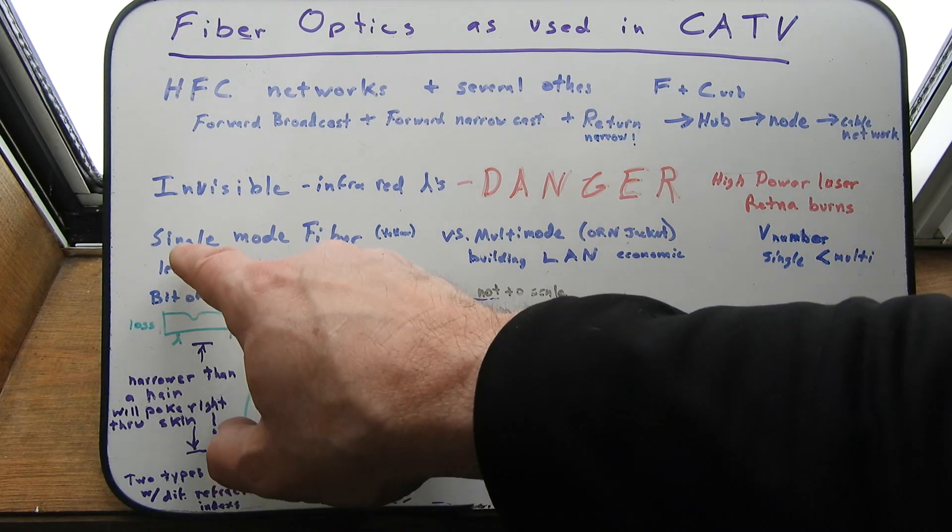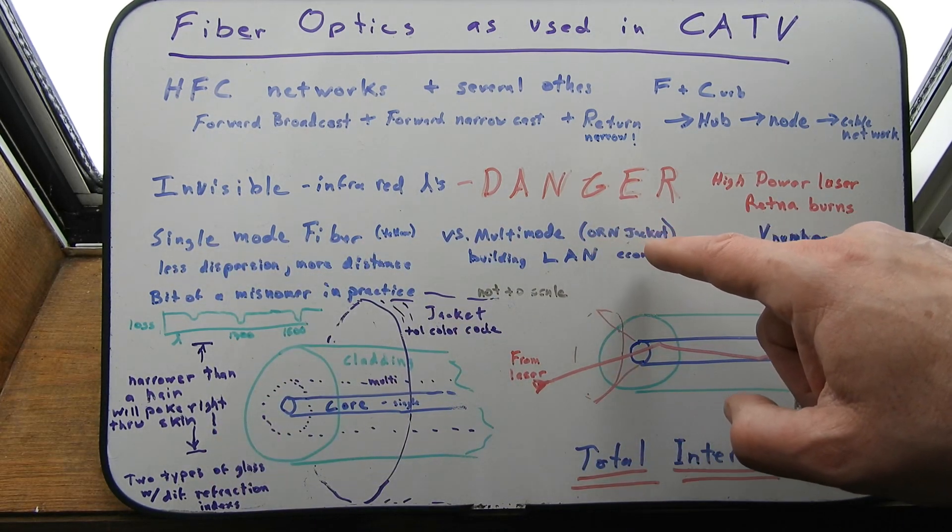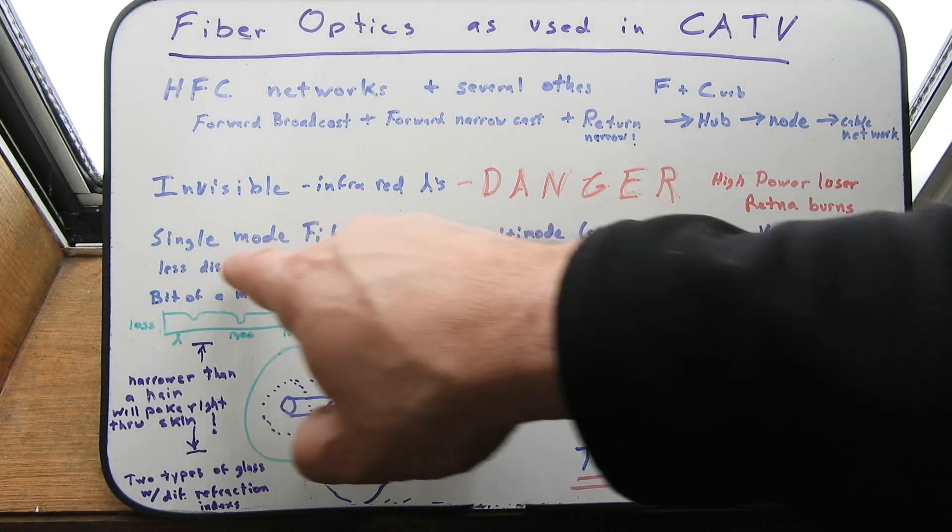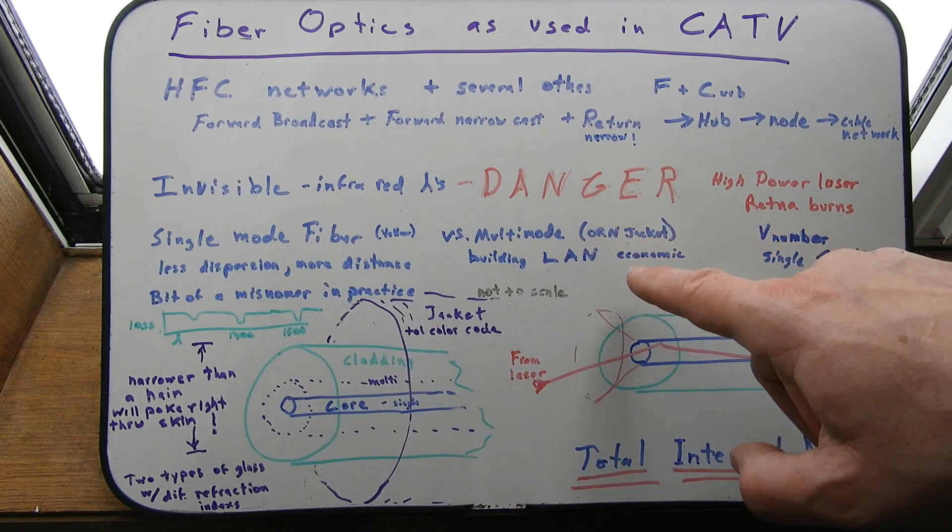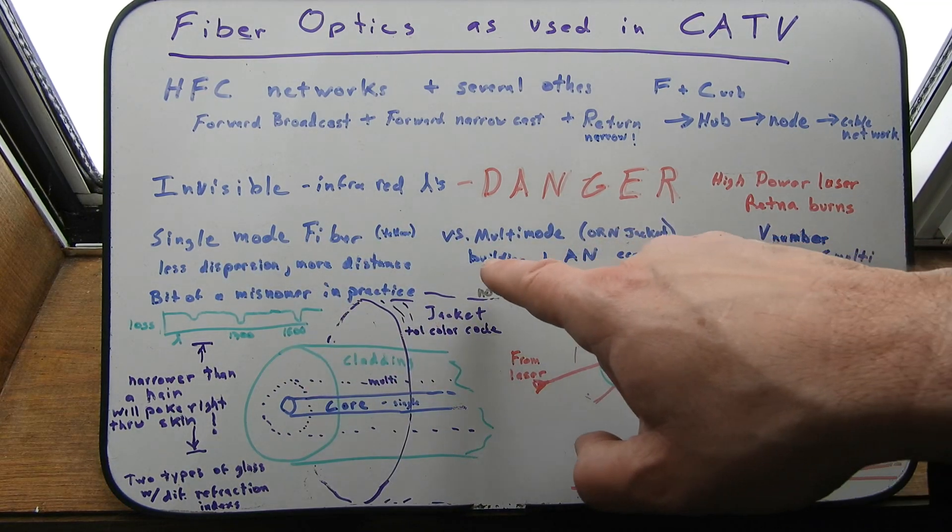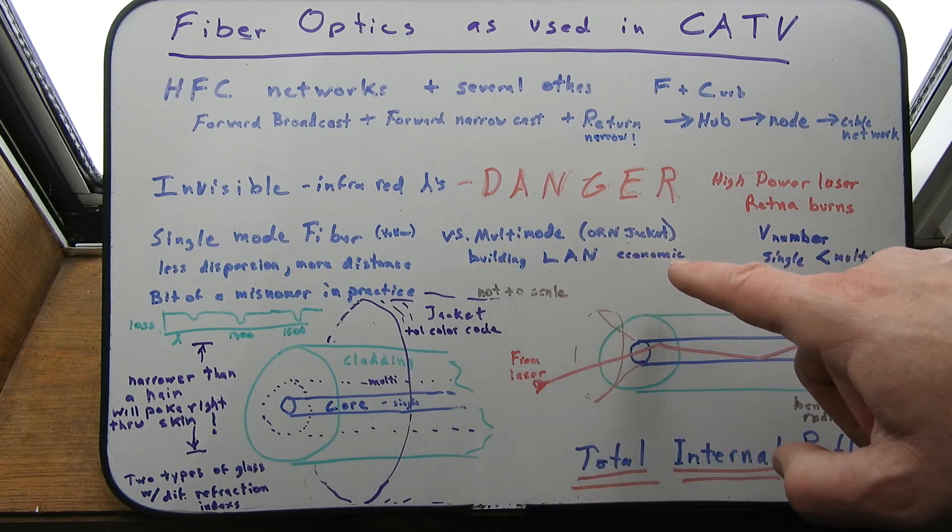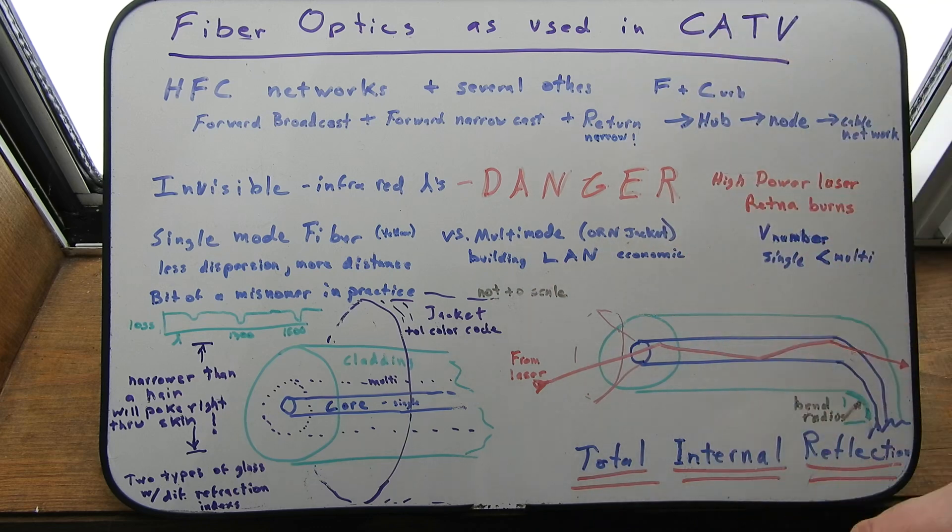Now there is something called multimode fiber cable. Usually orange jumpers in a patch panel. Usually yellow jumpers for a single mode in a patch panel. Cable really doesn't use multimode for much or anything that I know of. It's mostly used in a building, inner building LAN, you know, local area network type situation.